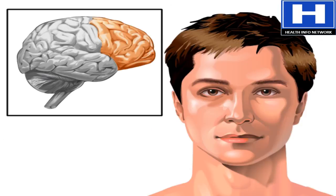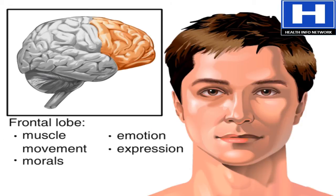Voluntary body movements are controlled by a region of the frontal lobe. The frontal lobe is also where we shape emotional reactions and expressions.